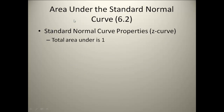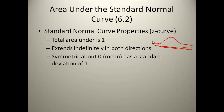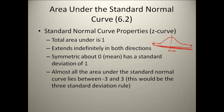With our standard normal curve, the total area under it is 1, which represents 100% of our data values. Our normal curve will extend indefinitely in both directions — it doesn't ever actually stop, and it won't cross our x-axis either. It's going to be symmetric about the mean, which is 0 because it's standardized, and we will have a standard deviation of 1. Almost all of the area under our curve will lie within three standard deviations — that's the three standard deviation rule.